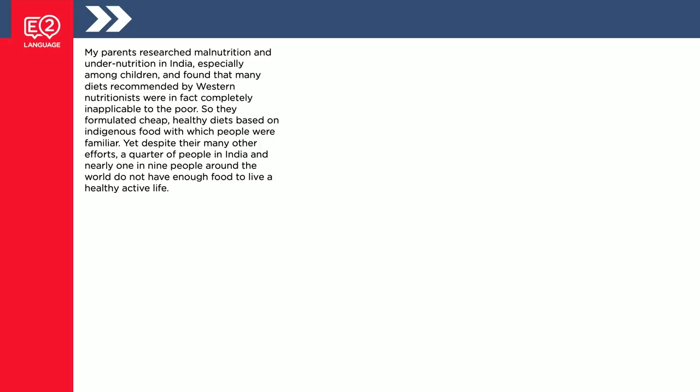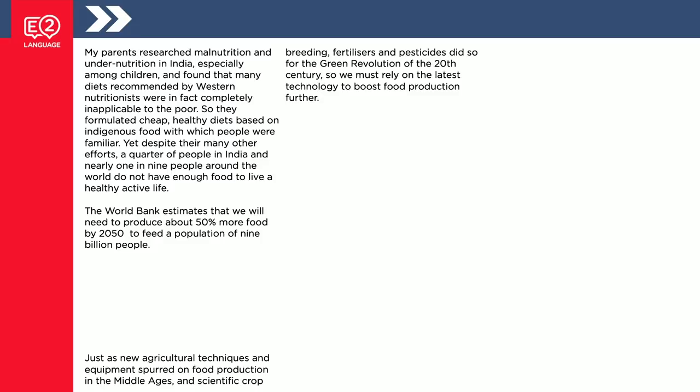My parents researched malnutrition and undernutrition in India, especially among children, and found that many diets recommended by Western nutritionists were in fact completely inapplicable to the poor. So they formulated cheap, healthy diets based on indigenous foods with which people were familiar. Yet despite their many other efforts, a quarter of people in India and nearly one in nine people around the world did not have enough to live a healthy, active life. Then we get into the topic sentences. The World Bank estimates that we will need to produce about 50% more food by 2050 to feed a population of nine billion people. Just as new agricultural techniques spurred on food production in the Middle Ages and scientific crop breeding, fertilisers and pesticides did so for the green revolution of the 20th century. So we must rely on the latest technology to boost food production further. See the writer's opinion there?